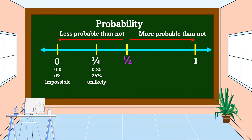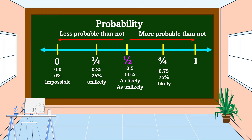One half we can write in decimal as 0.5 or in percent as 50 percent — this means it is as likely as unlikely to happen. In between one half and one is three fourths, which we can write in decimal as 0.75 or in percent as 75 percent — this means it is likely to happen. And one we can write in decimal as 1.0 or 100 percent — this means it is certain or surely to happen.